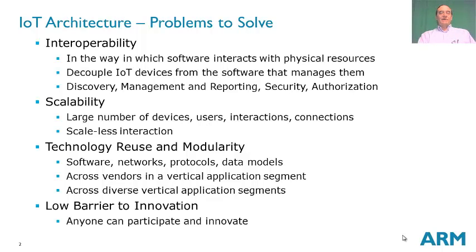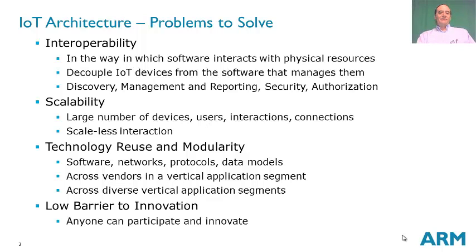We also want scalability. We expect the Internet of Things to scale to billions of devices, with huge numbers of devices, users, services, and connections. We want the interaction to be scale-less, so it shouldn't matter whether we're talking to a device across the room or across the world — the protocols and the way applications and devices interact should be the same. We need a high degree of technology reuse and modularity, just like the web. We want software, networks, and protocols to be reused between different applications and across different domains in IoT, with a common software infrastructure across different vertical segments. And finally, we want a low barrier to innovation so that anyone can participate and create new applications and new devices for the Internet of Things.